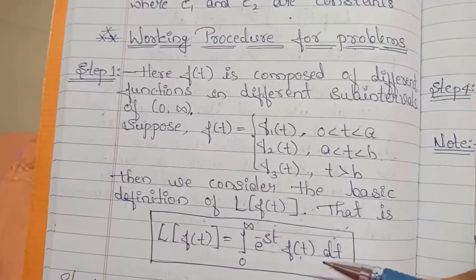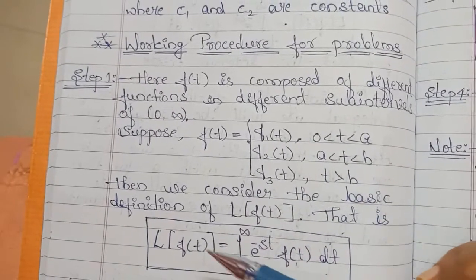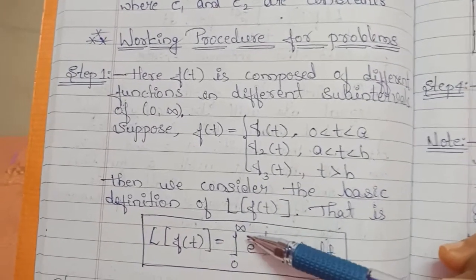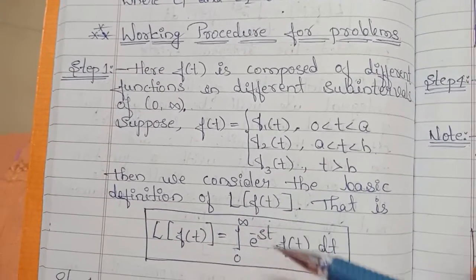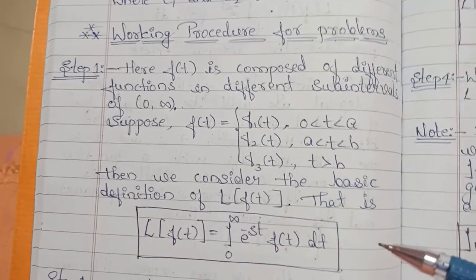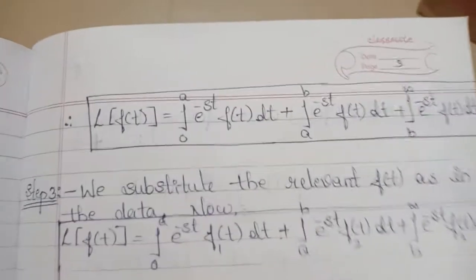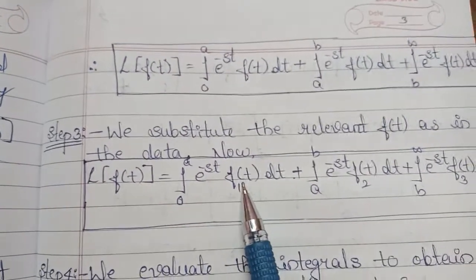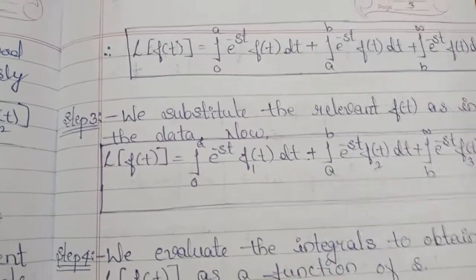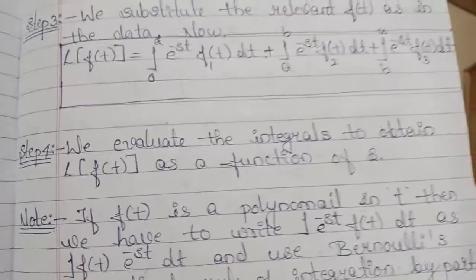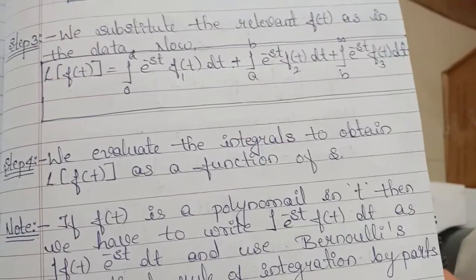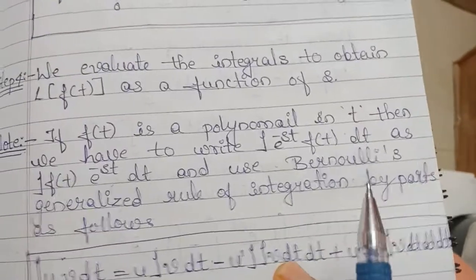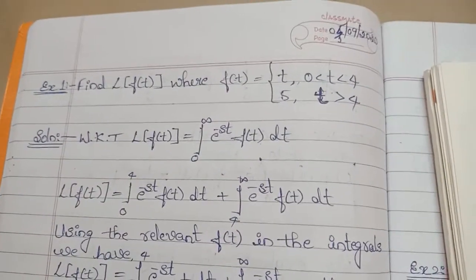The procedure is: first, consider the basic definition of Laplace — L{f(t)} equals the integral from 0 to infinity of e^(−st) f(t) dt. Next, replace the given limits. After that, substitute the relevant f(t) from the example. Finally, to solve the integrals, use Bernoulli's rule. Let us see the examples.